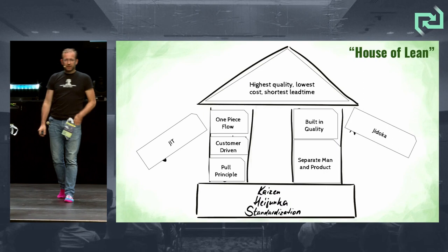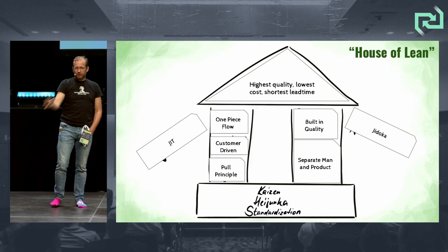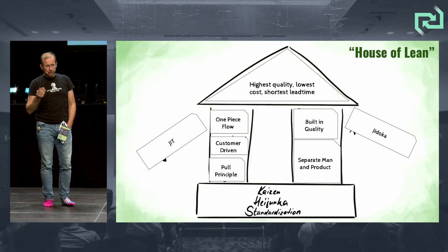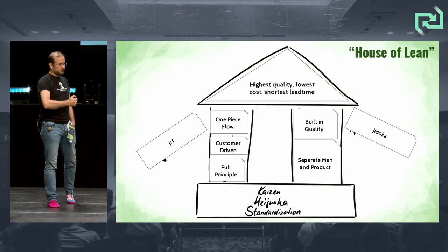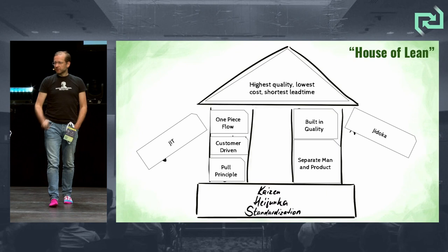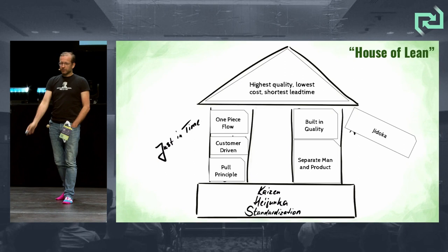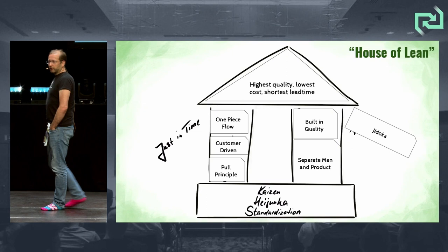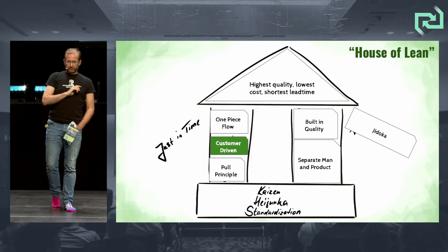The stuff we want to talk about today is basically connected to the House of Lean. There are several depictions of it out there and we want to lean on the original one from Taiichi Ohno's book in English translation. We found some misconceptions in how they're used today, so we'll go through the translations and the Lean concepts. We already heard 'just in time' — the left pillar — so we want to start with 'customer-driven.'